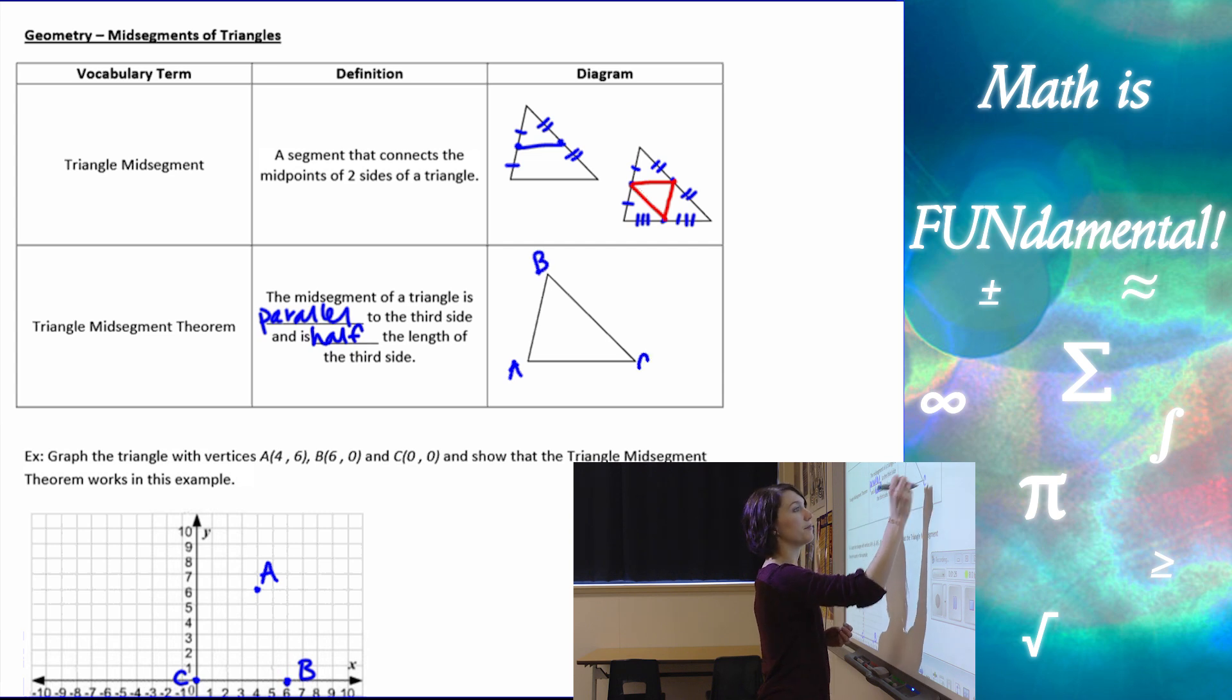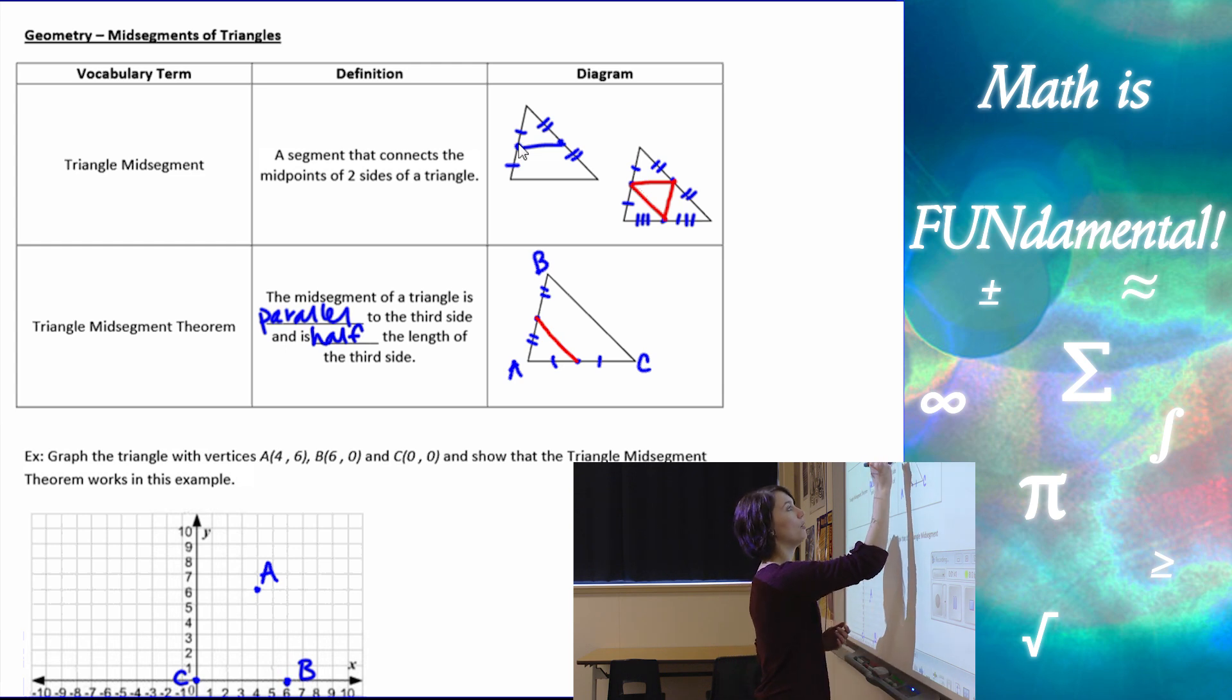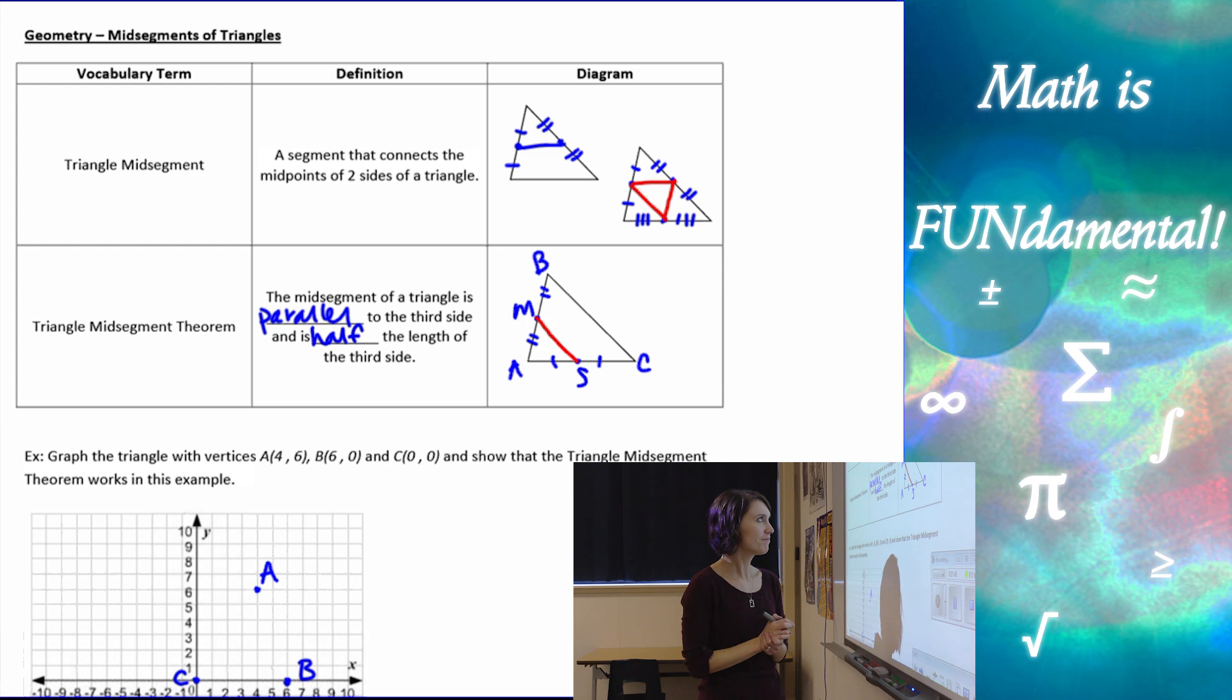If I have triangle ABC, and let's just look at the mid-point of AC and the mid-point of AB, if I connect those two mid-points, I end up with a mid-segment of the triangle, and we can label that, oh I don't know, MS for mid-segment, why not?